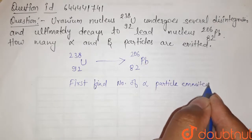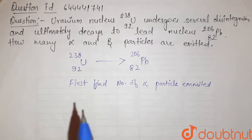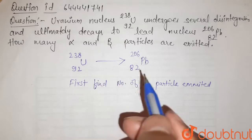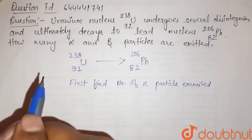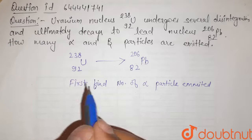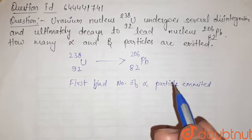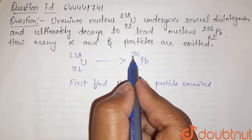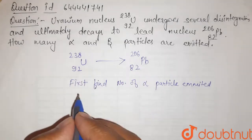Why? Because in beta emission, the mass number remains the same. The mass number only changes in case of alpha emission. So from mass number, we can clearly get the number of alpha emissions.